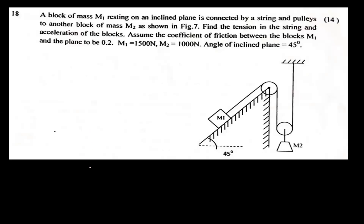A block of mass m1 resting on an inclined plane is connected by a string and pulleys to another block of mass m2 as shown in figure. Find the tension in the string and the acceleration of the block. Assume that the coefficient of friction between the block m1 and the plane is 0.2, m1 is equal to 1500 newton, m2 is equal to 1000 newton, and the angle of the inclined plane is equal to 45 degrees.